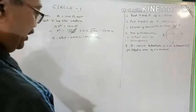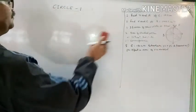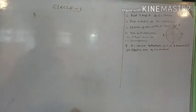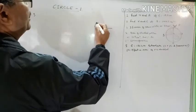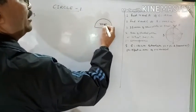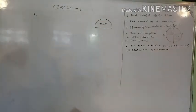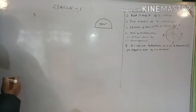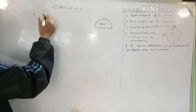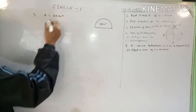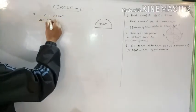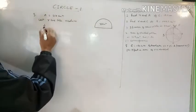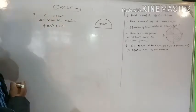You can leave the answer in terms of pi since the given values were also in terms of pi. If the value of pi is provided, you can substitute it. Question three: if the area of a semicircle is 77 cm², find the perimeter. The perimeter includes the curved part plus the diameter, so we call it perimeter, not circumference.